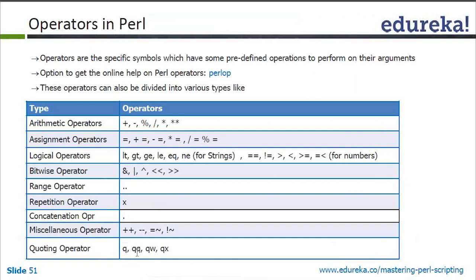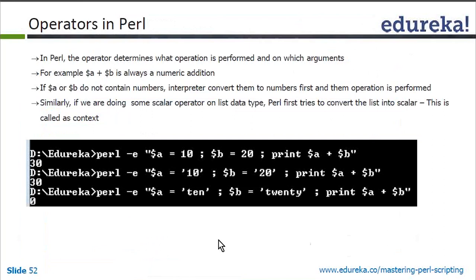Then there is the quoting operator: Q, double Q (QQ), QW, and QX. QW is used if you want to specify a path initially. These are all things to go through; as we move forward we will understand them better.